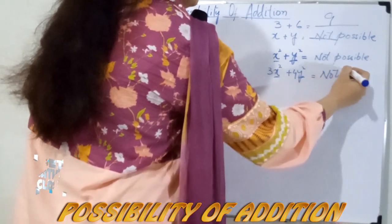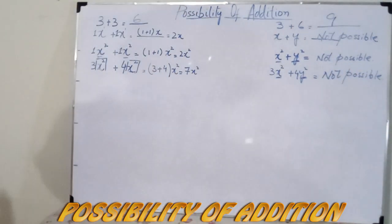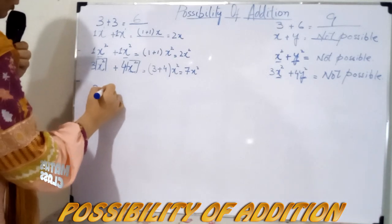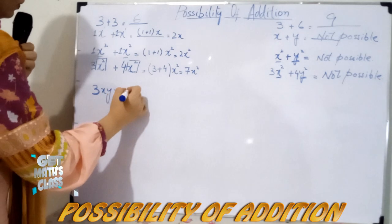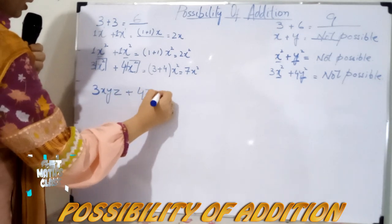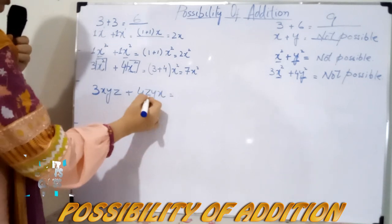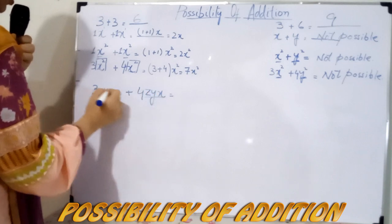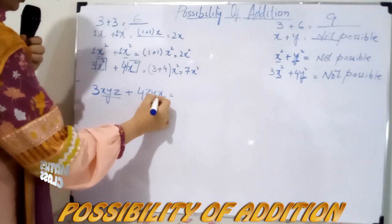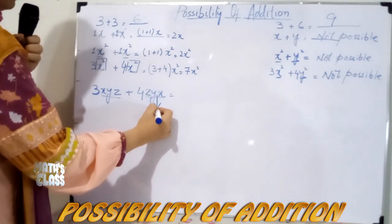In this example, the variable part consists of more than one variable. First of all, you need to rearrange the variable part. Because we have x, y, and z — or z, y, and x — you need to rearrange these variables according to alphabetical order.